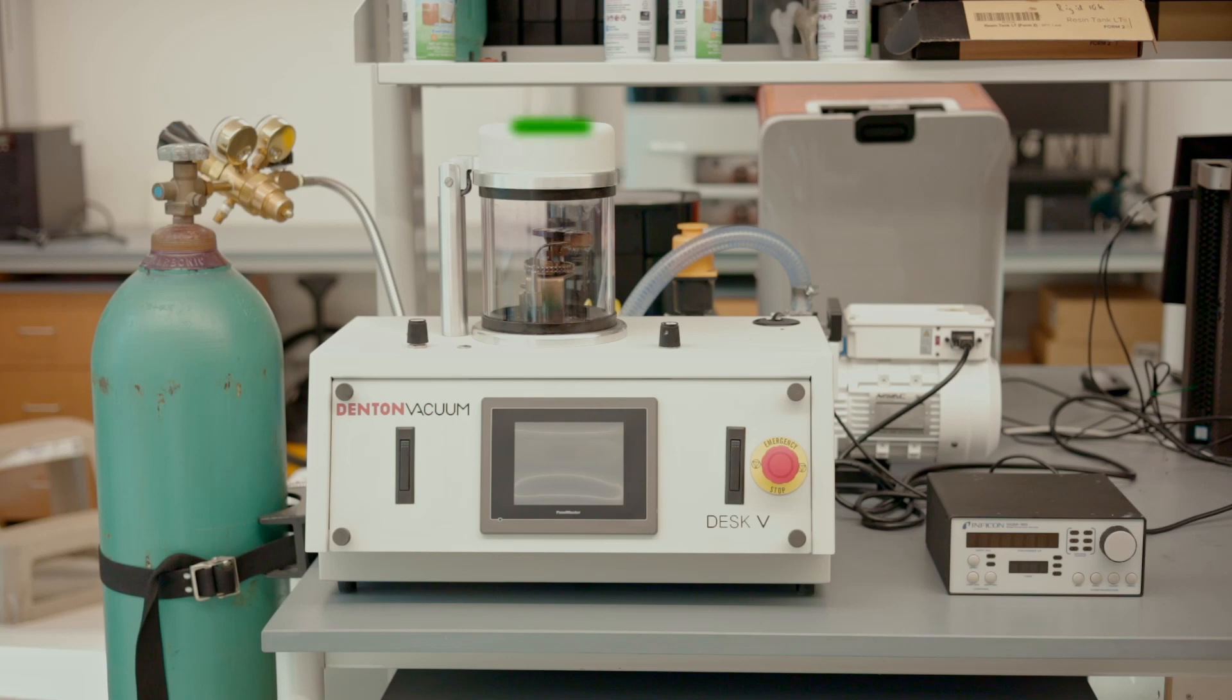The sputter coater has a vacuum chamber where we load the samples, a touch display, and an emergency stop. Use the emergency stop during any step of the coating process to stop the equipment and prevent any damage to the sputter coater, the samples, or the surroundings.